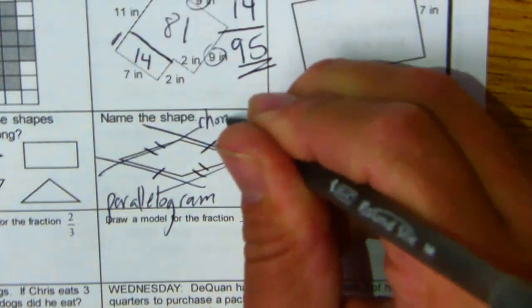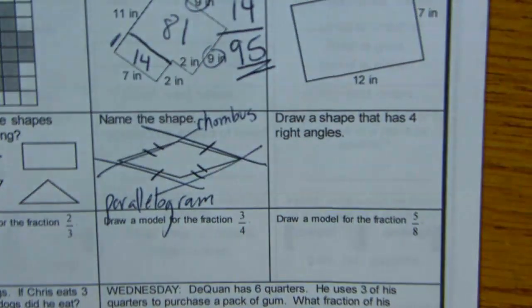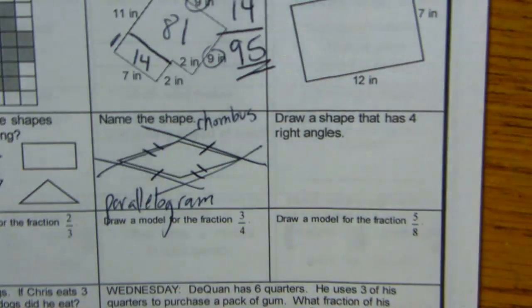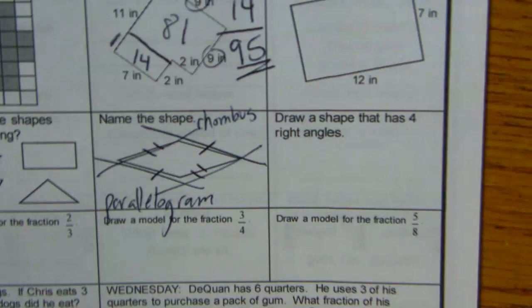Okay, trapezoid? No, trapezoid only has opposite sides that are parallel—only one pair, I think. Is it? I mean, you could say it's a quadrilateral too, but that's kind of... you could say it's a polygon.